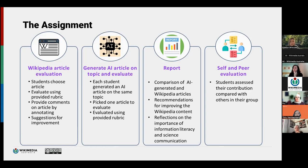Students provided their analysis in a short report. They also wrote about their recommendations for the Wikipedia article and reflected on the importance of information literacy and science communication. I also added a self and peer evaluation component for students to assess their contribution to the assignment compared with others in their group — basically just to keep fairness there.